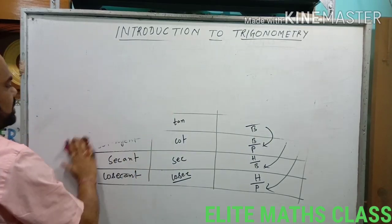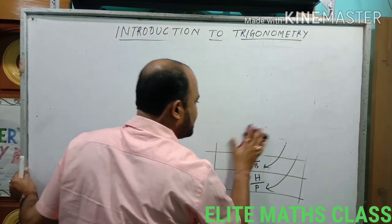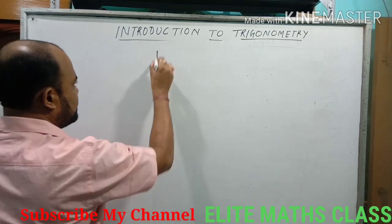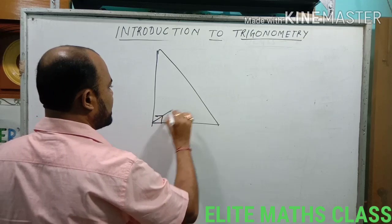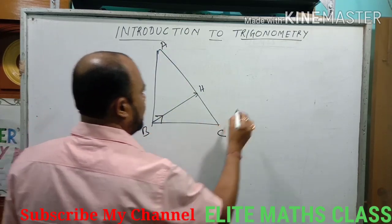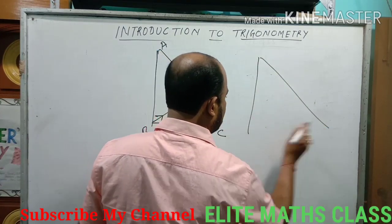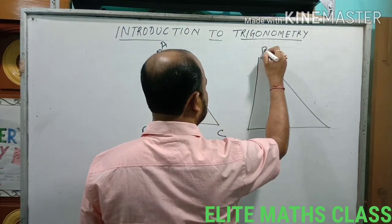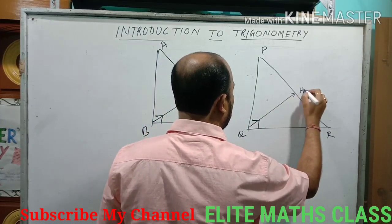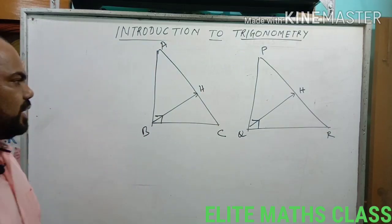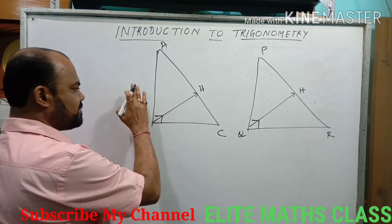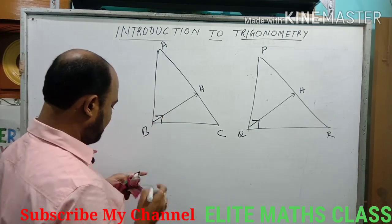Regarding Perpendicular, Base, and Hypotenuse — which side is Hypotenuse is fixed. In every right triangle, the side opposite to 90 degrees is the Hypotenuse. Let us take another right triangle, say PQR, with the right angle at Q, so this one is Hypotenuse. The question is: which of the two remaining sides is Perpendicular and which one is Base?